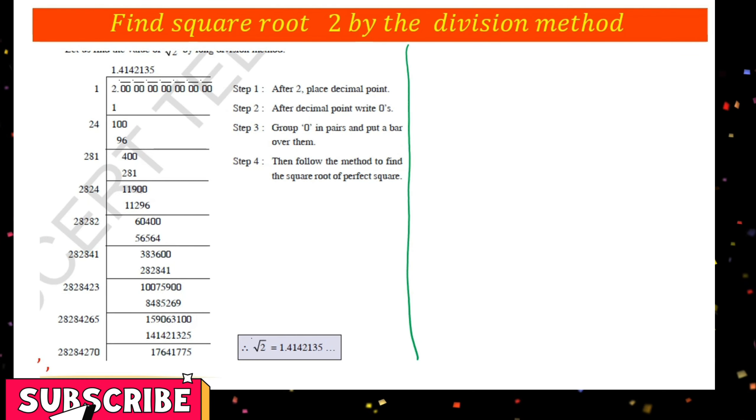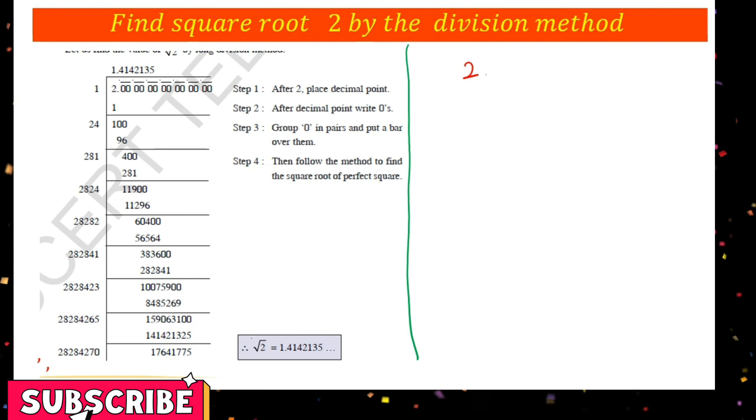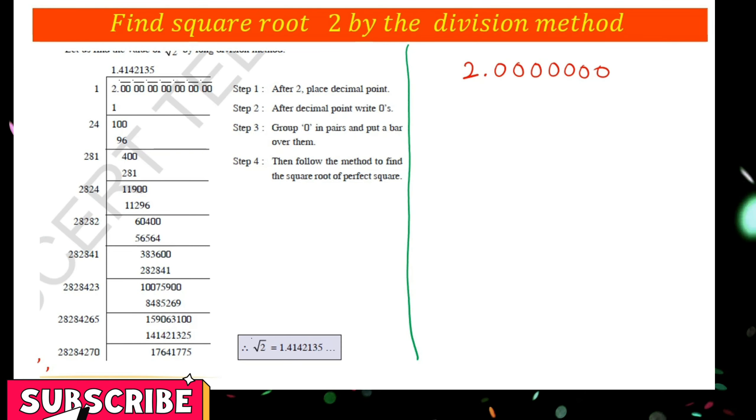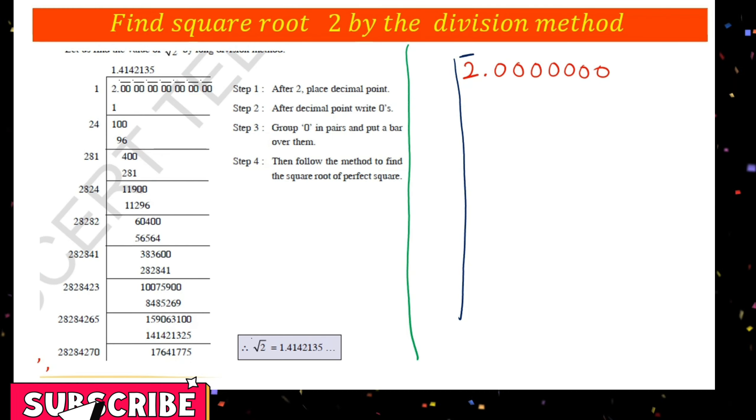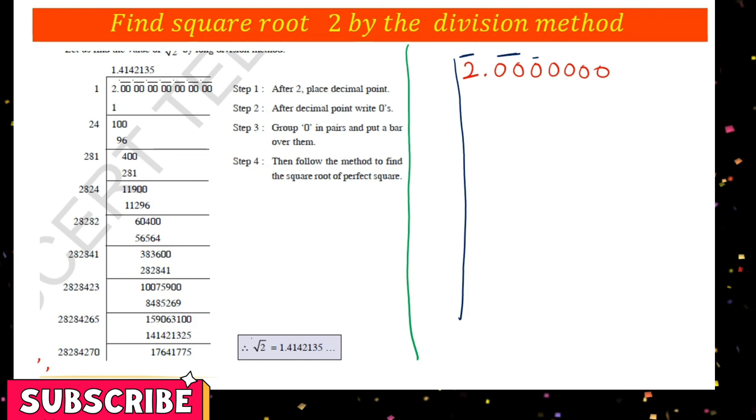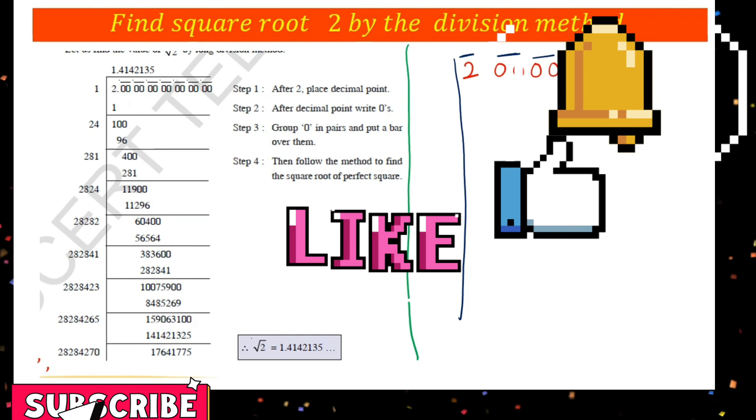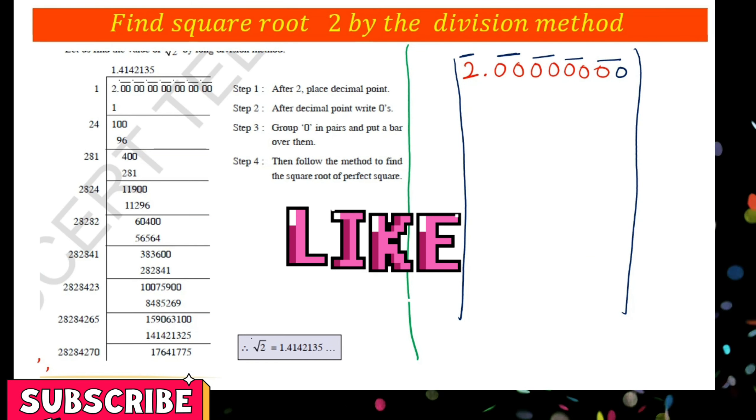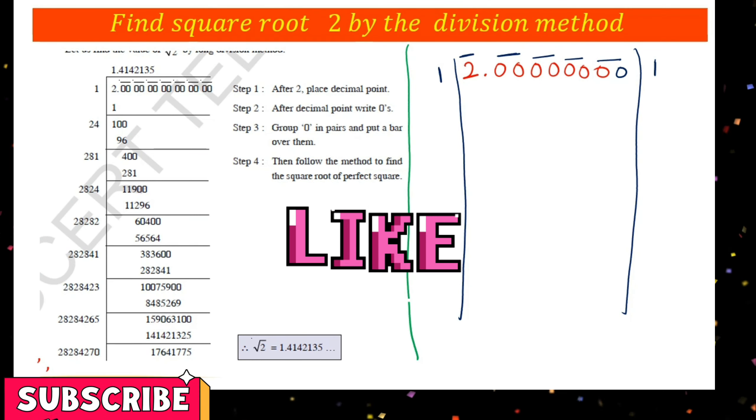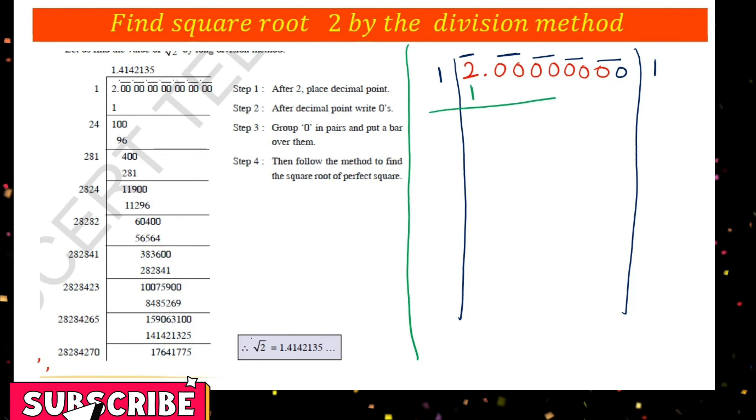First, take the number 2 and write it as 2.000000. Put a bar on the numbers - in the integer part from right to left, and in the decimal part from left to right, on every two digits. In the integer part we have only 2, so the square number less than or equal to 2 is 1. One times one equals one. Subtract to get 1.